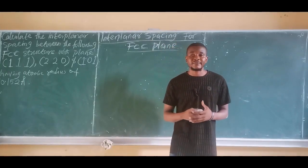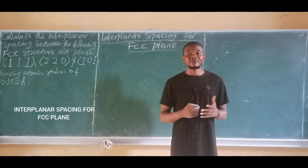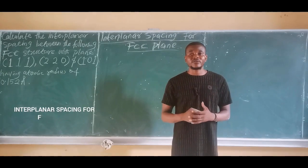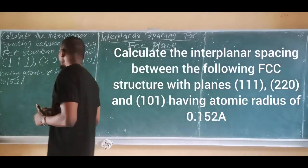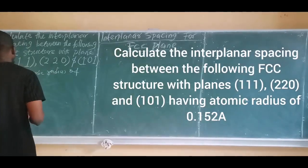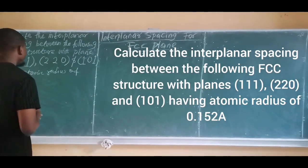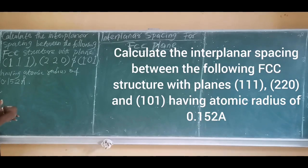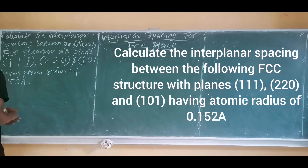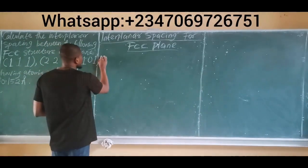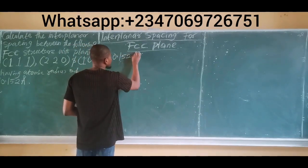Hello and welcome to Engineer's Mindset. In this video we are going to be looking at interplanar spacing for FCC planes. Let's consider this question on the board to explain this concept. The question says: calculate the interplanar spacing between the following FCC structure with planes 111, 220, and 101, having an atomic radius of 0.152 Angstrom units.